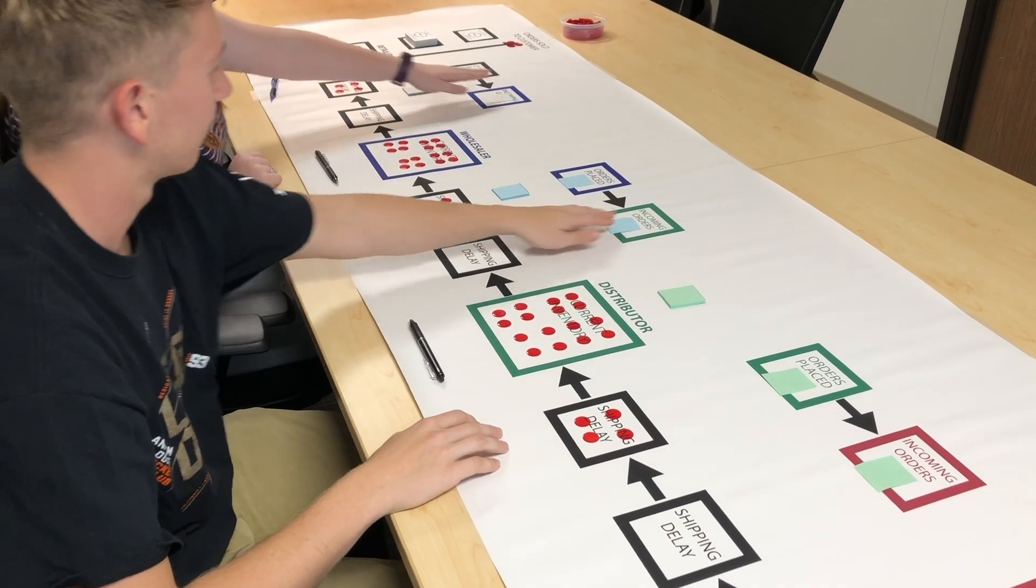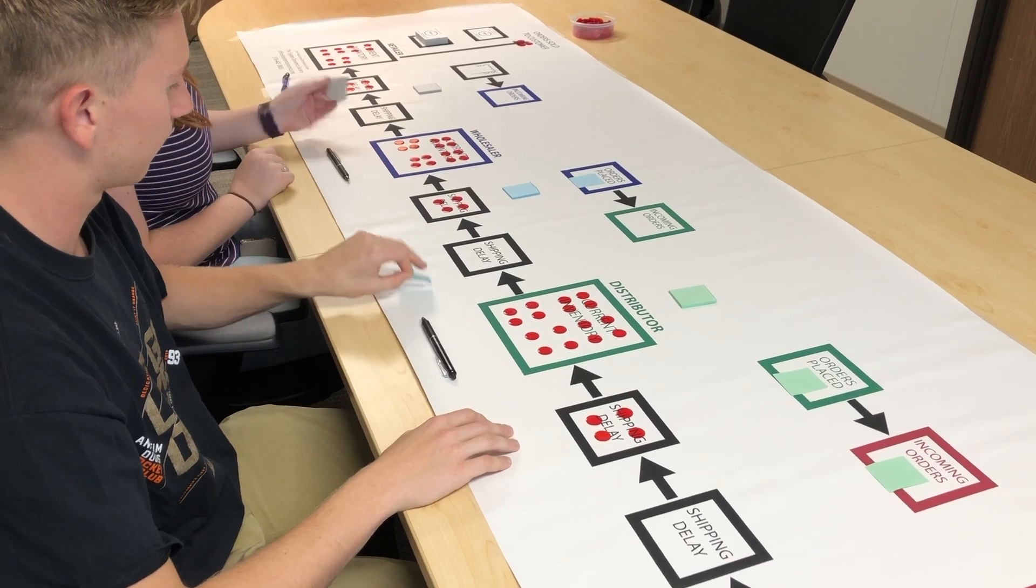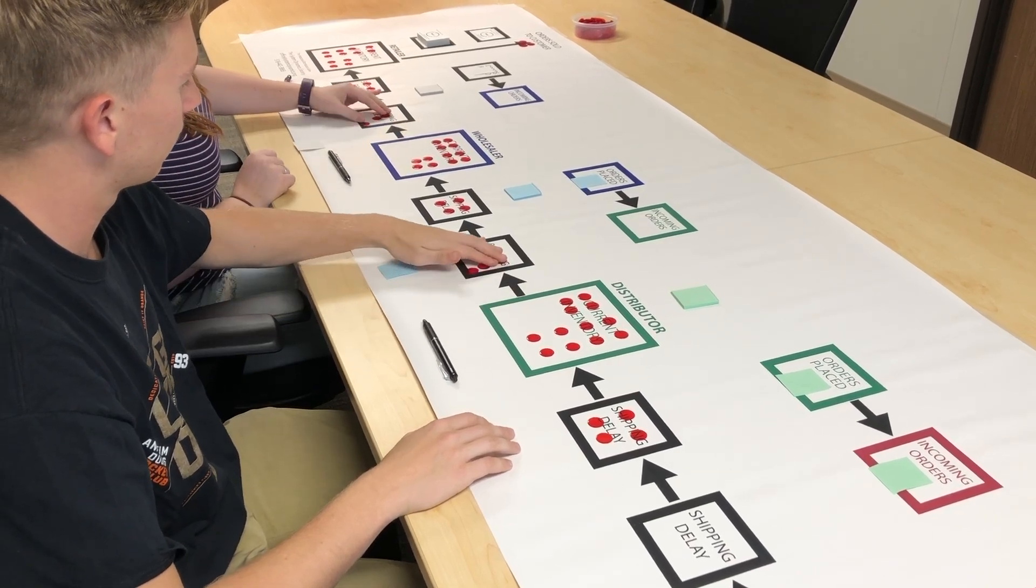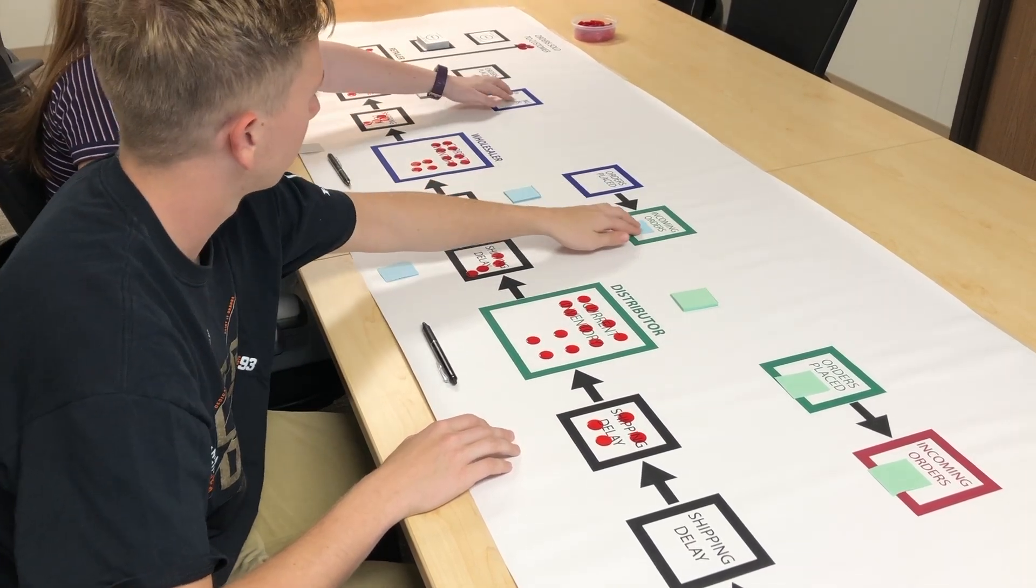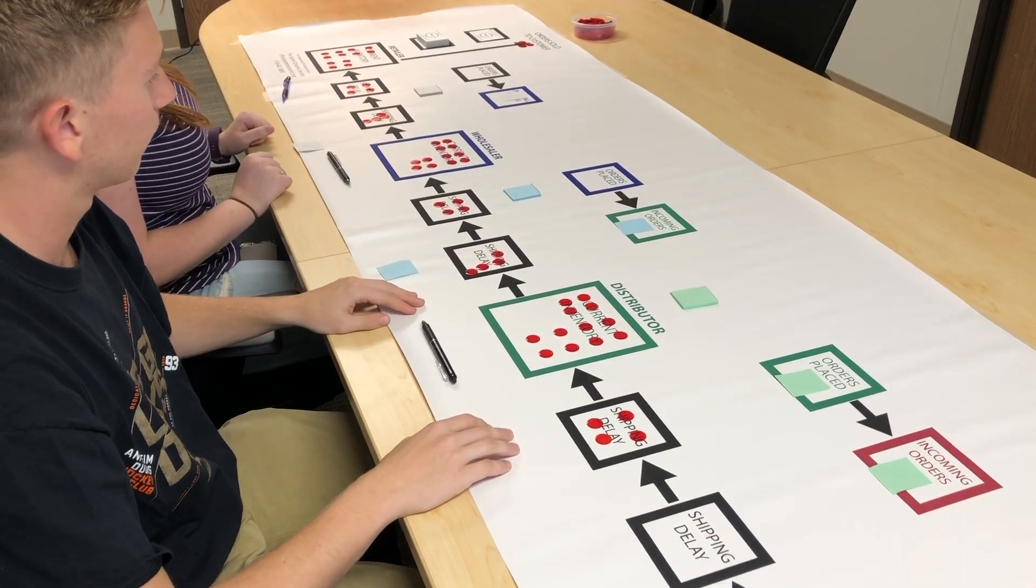The distributor and manufacturer do the same thing. They look at their incoming orders, push the needed amount of chips to the shipping delay, and then slide the orders placed slip to the incoming orders box.